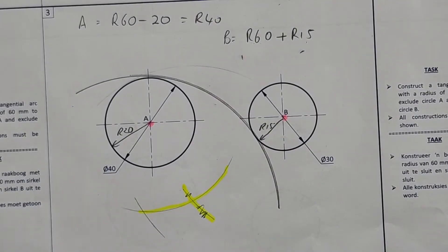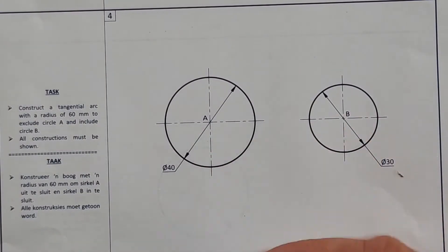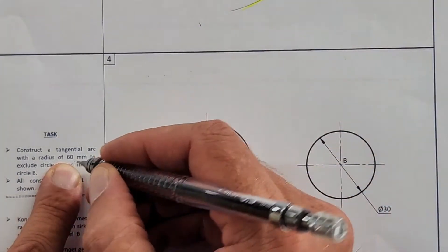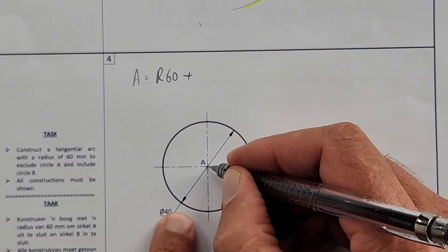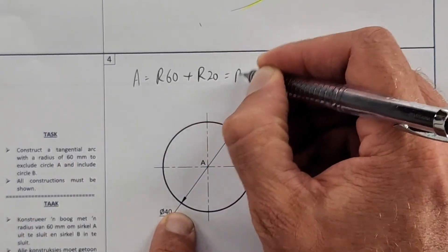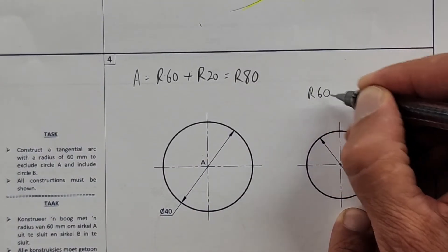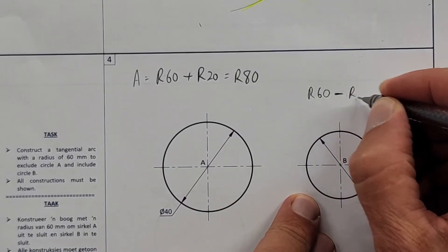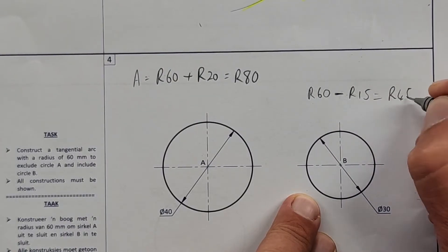The last one: construct the tangential arc with radius 60 to exclude circle A and include B - they've flipped it around. So for A, it is excluding: radius 60 plus radius 20 equals radius 80. For B it is inclusive: radius 60 minus radius 15 equals 45.